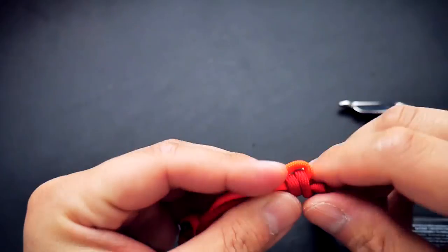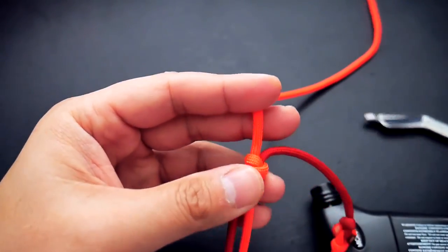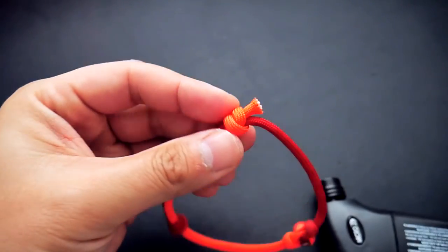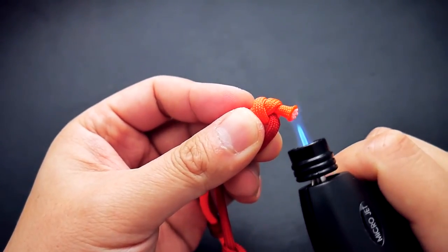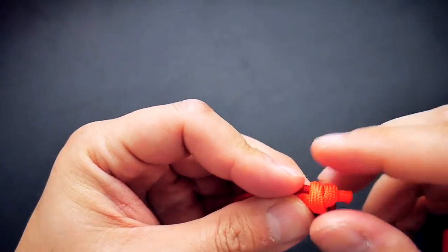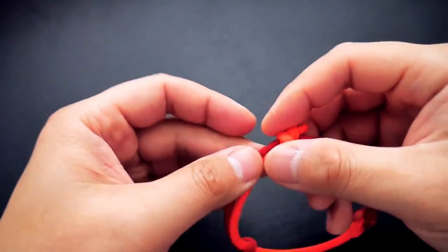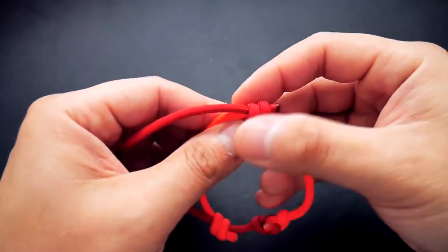Just melt those ends so they don't fray. I like to leave a little bit of a tip on the end of the cord, or you could clip off the cord really close to the scaffold knot too if you want. It's entirely up to you.